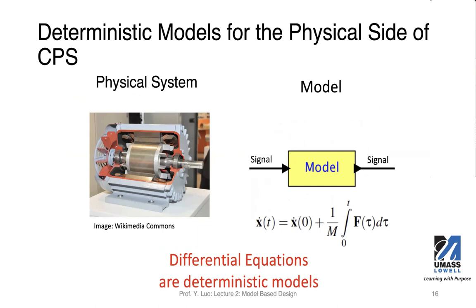Cyber-physical systems have both a cyber side and a physical side. The physical side involves physics dynamics, sensing, or actuation. Any physical system we interact with follows some kind of physics law. We can model such physical processes using signals going into and out of the machine. Often these models are continuous models because the physical process is continuous. You will see a lot of differential equations when modeling physical processes, and such differential equations are deterministic models.